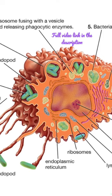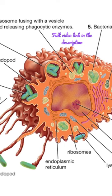Endocytic vesicles and lysosomes are present. The cells have irregular surfaces bearing phylopodia and irregular microvilli. Most of the cells are oval in shape.